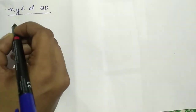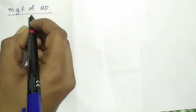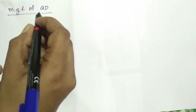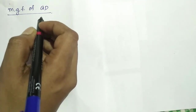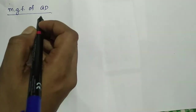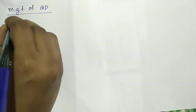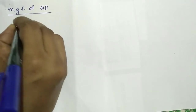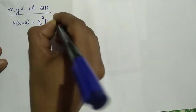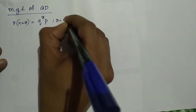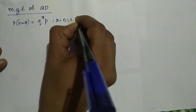Hello friends. In this video, we will discuss the moment generating function of geometric distribution and derive another. We have the probability mass function of geometric distribution as q raised to x times p, where x is from 0 to infinity.